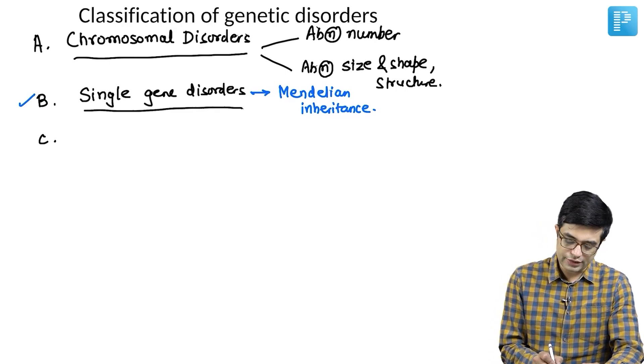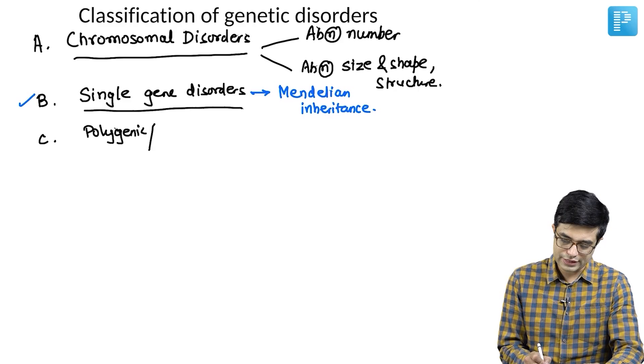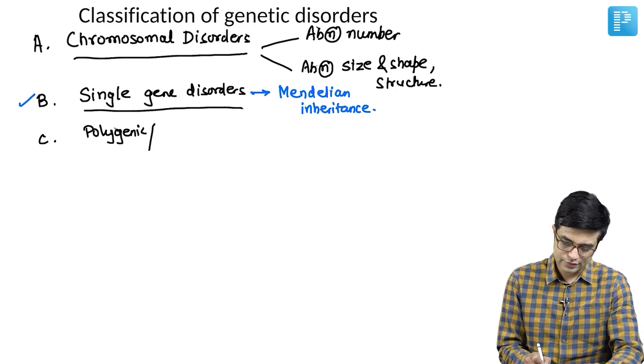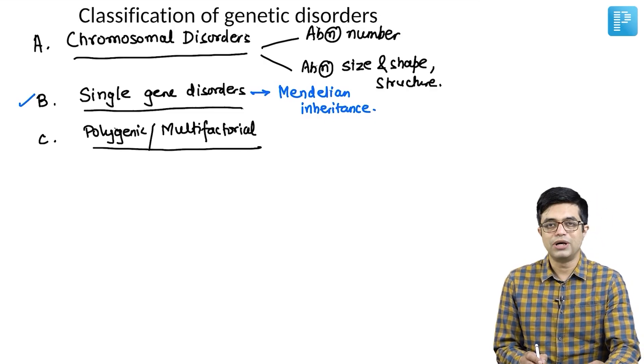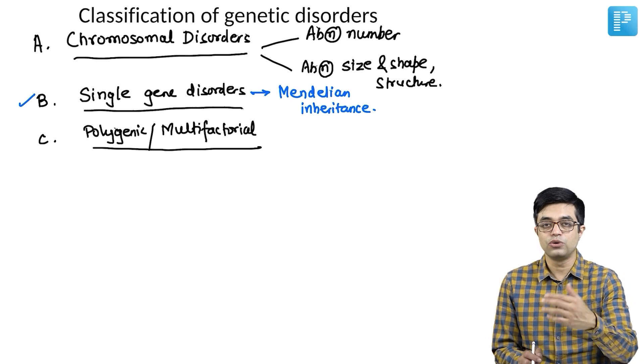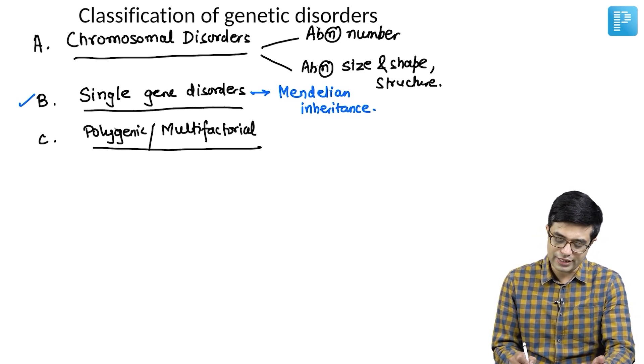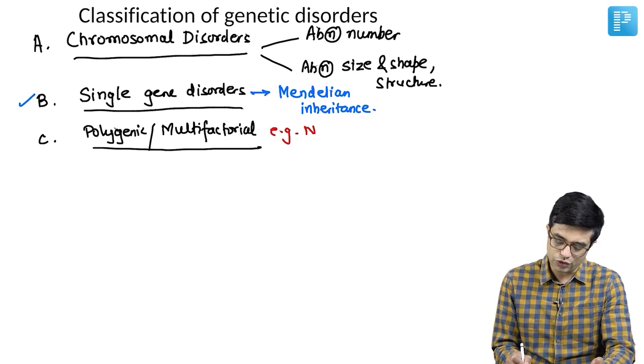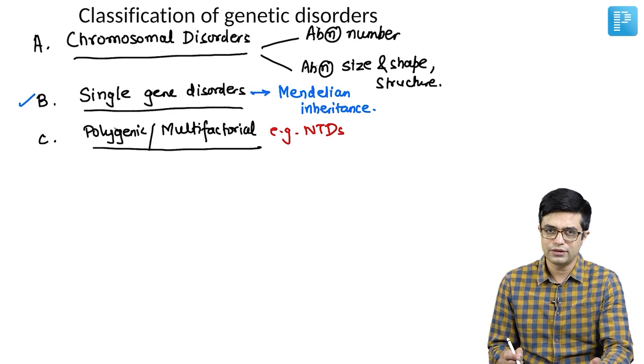The third category are the polygenic disorders, also called as multifactorial disorders. Polygenic or multifactorial will not have a single gene, multiple genes each one contributing, and sometimes there may also be role of environmental influences. Polygenic or multifactorial inheritance is typically seen in patients with neural tube defects. It is also seen in some other disorders.